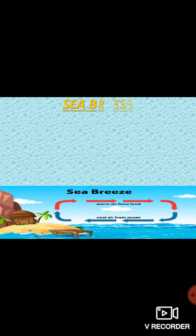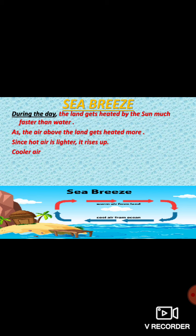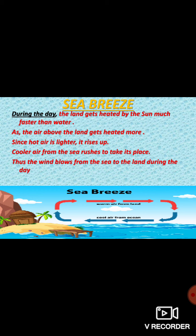Let us study about sea breeze. During the day, the land gets heated up by the sun much faster than water. As the air above the land gets heated more, and since hot air is lighter, it rises up. Cooler air from the sea rushes to take its place. Thus, the wind blows from the sea to the land during the day. This is called sea breeze, as you can see in the diagram.